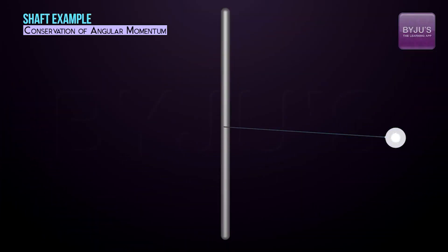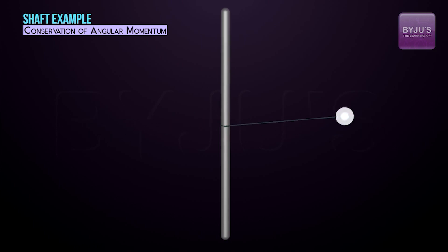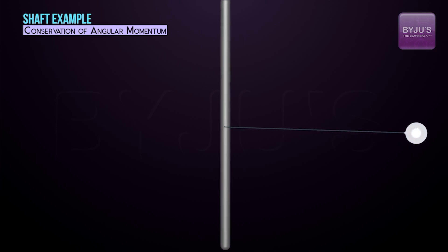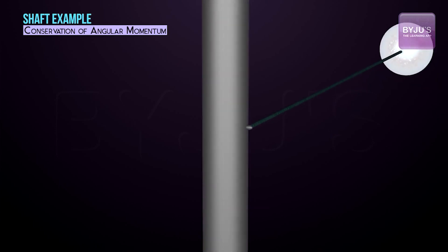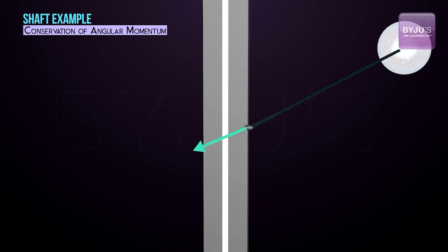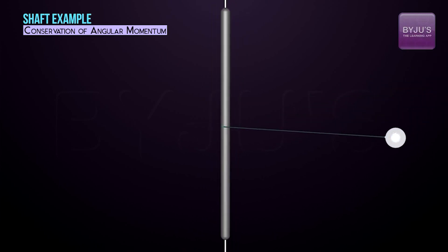Now let's analyze the toy example — a shaft with a mass spinning around it on a string. The force acting on the system comes from the shaft, which is a normal force. But the axis of rotation also passes through the shaft, so the point of application of the force lies on the axis, meaning the net torque about that axis is zero. Therefore we can conserve angular momentum about that axis.